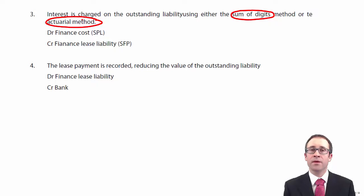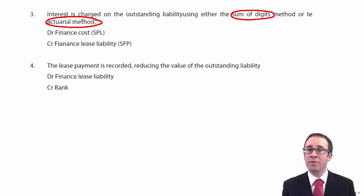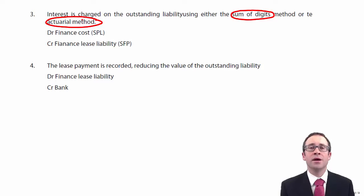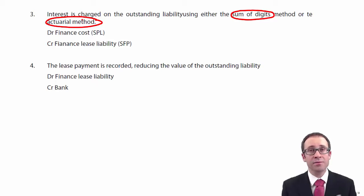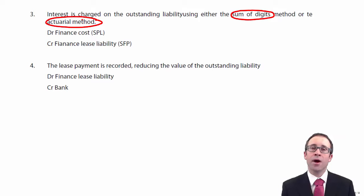Let's recap the four steps. First, we capitalise the asset and record the finance lease liability at the lower of the fair value and the present value of minimum lease payments. Second, we depreciate the asset over the shorter of the lease term and the useful life. Steps three and four — in any order — are to record the interest, which is an expense in profit or loss increasing the liability, and to record the payment, which reduces the cash balance and the lease liability.